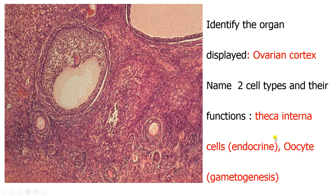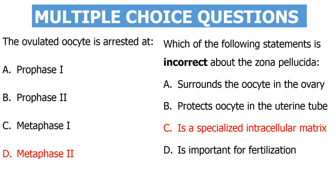There are two key cell types: the theca interna, which is endocrine, and the oocyte itself, which participates in gametogenesis. The ovulated oocyte is arrested at metaphase two. Remember, ovulation completes the first meiosis, so you enter second meiosis, and at metaphase of the second meiotic phase is where the secondary arrest occurs.